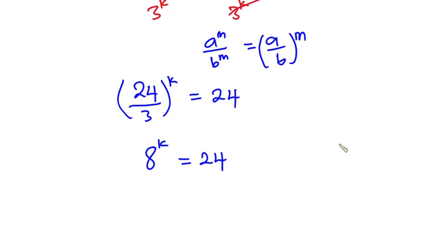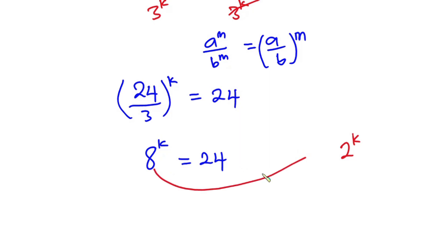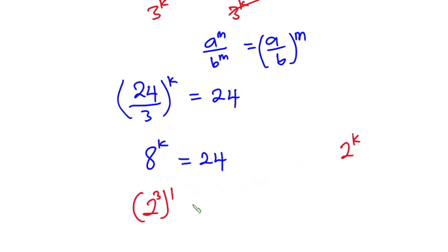Since we are looking for 2 to the power k, I will write 8 in the form 2^3. So we have (2^3)^k equal to 24.